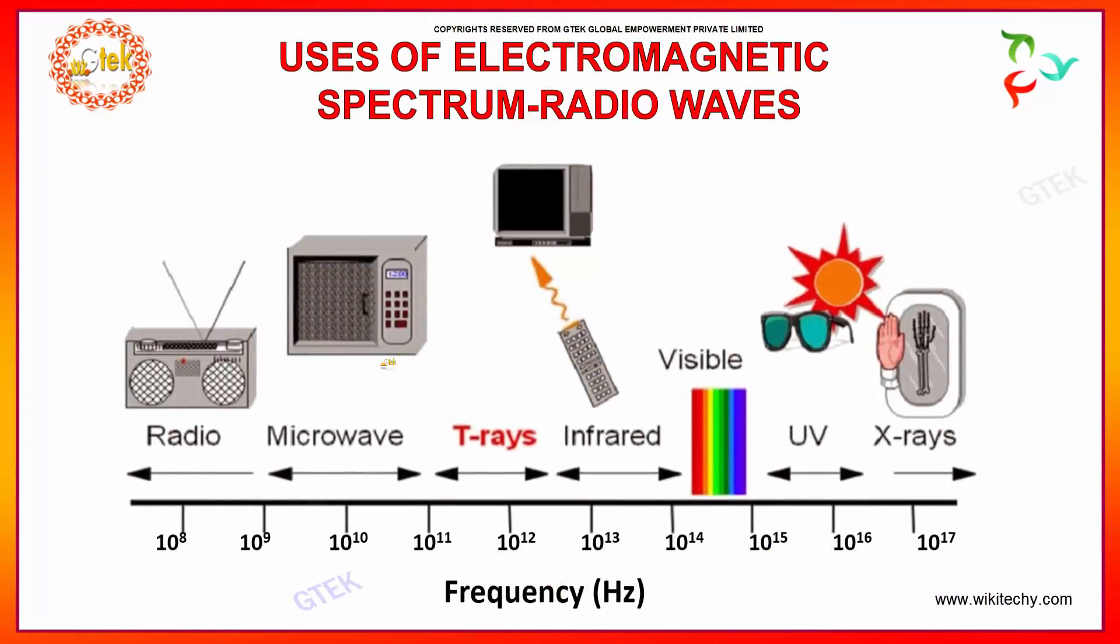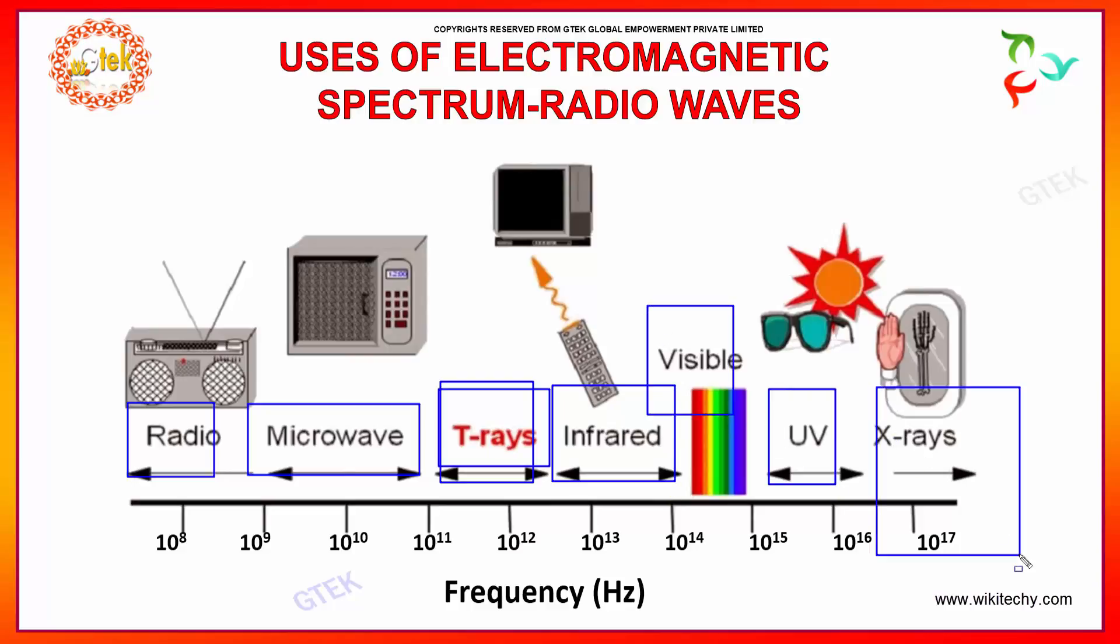If you talk about the uses of electromagnetic spectrum, you can see radio waves, microwaves, T-rays, visible light, X-rays, infrared, and UV rays. This shows the uses of the electromagnetic spectrum.